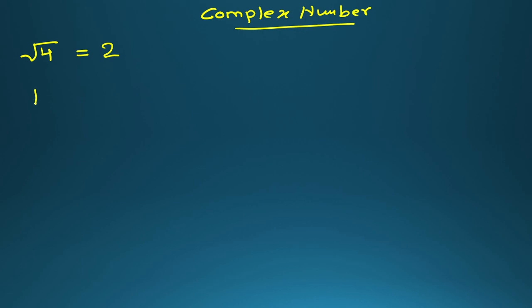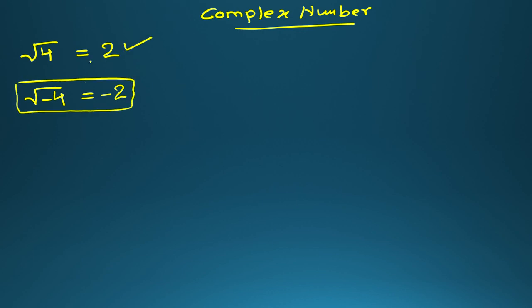If I ask the same question: what will be the square root of minus 4? Maybe some of you will say it is minus 2. I am sure it is wrong, but you can check with your friends also. Ask them: square root of 4 is equal to what? Definitely they will say 2, or maybe plus minus 2. But for square root of minus 4, some students will say minus 2.